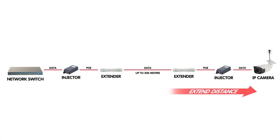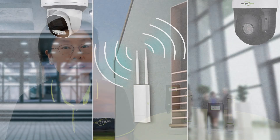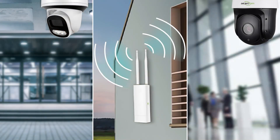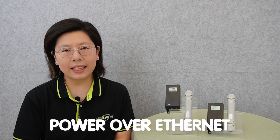Using two Ethernet extension kits allows users to extend network connection up to 300 meters using existing cable. This method addresses the challenge of limited network reach, providing flexible solutions for applications such as surveillance systems, access points, and other scenarios where extending network data is crucial for efficient and effective operations.